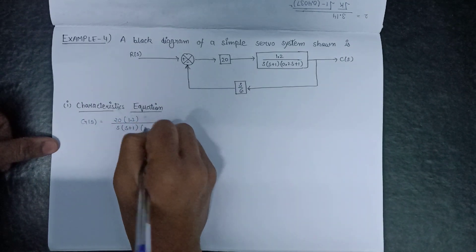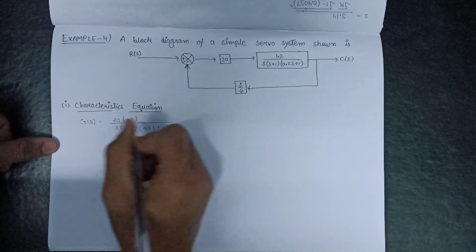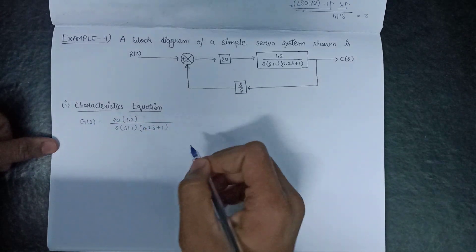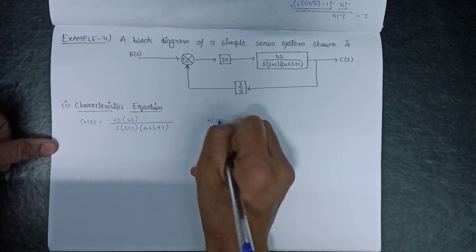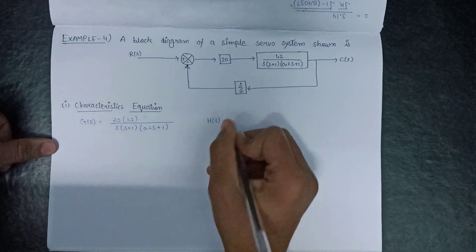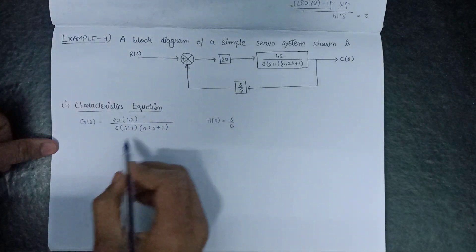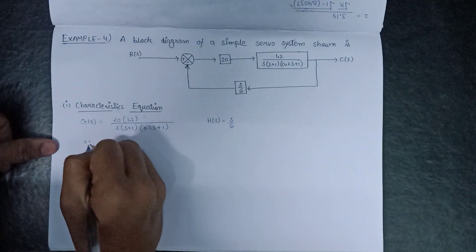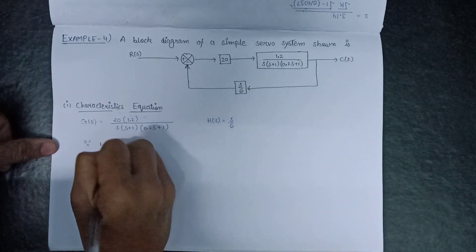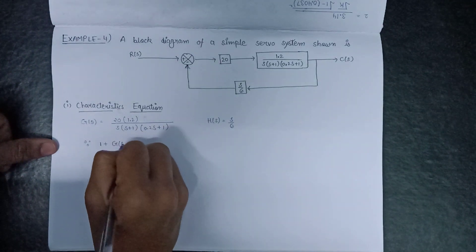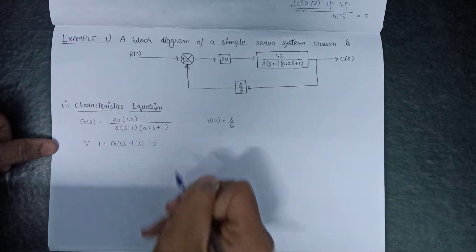So G is equal to 20 × 1.2 / [s(s+1)(0.2s+1)], and H is given as s/6. We know that the basic expression of the characteristic equation is 1 + G·H = 0.